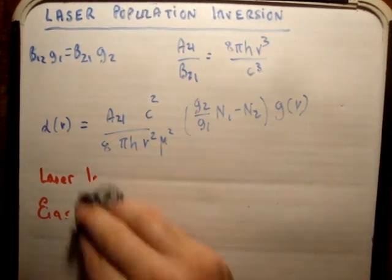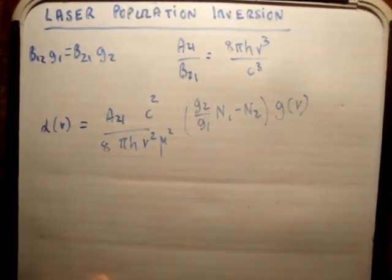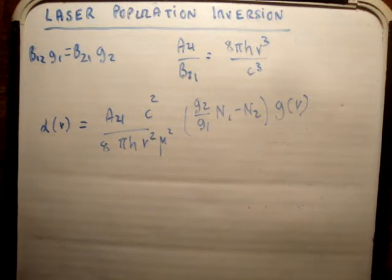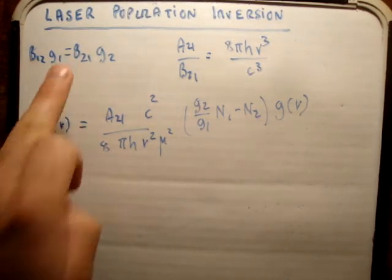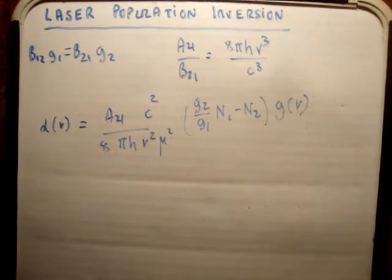So very quickly, in those videos I proved the following relationships up here, and I'll just remind you what they mean. So if I'm talking about B, that is a stimulated transition.